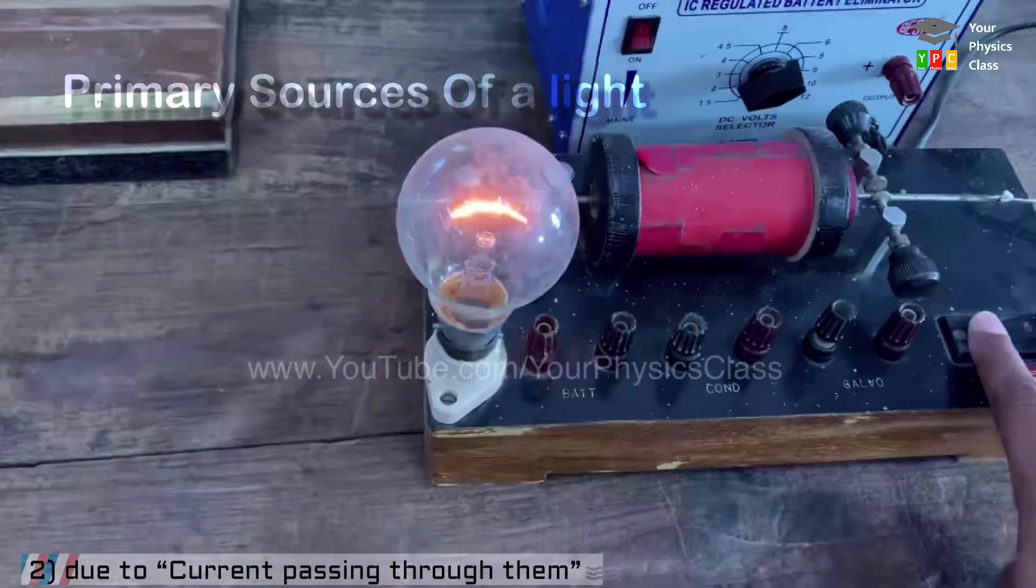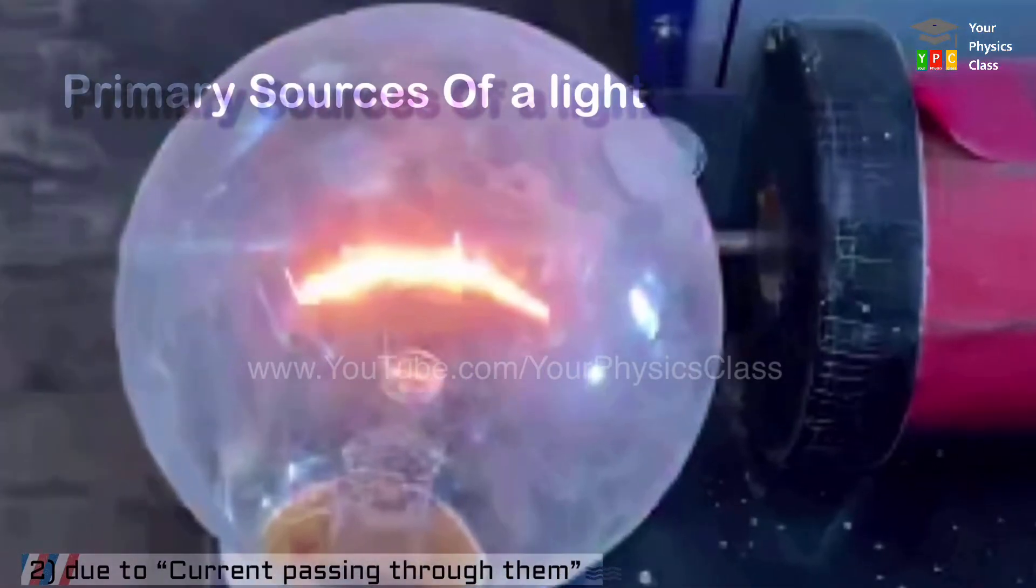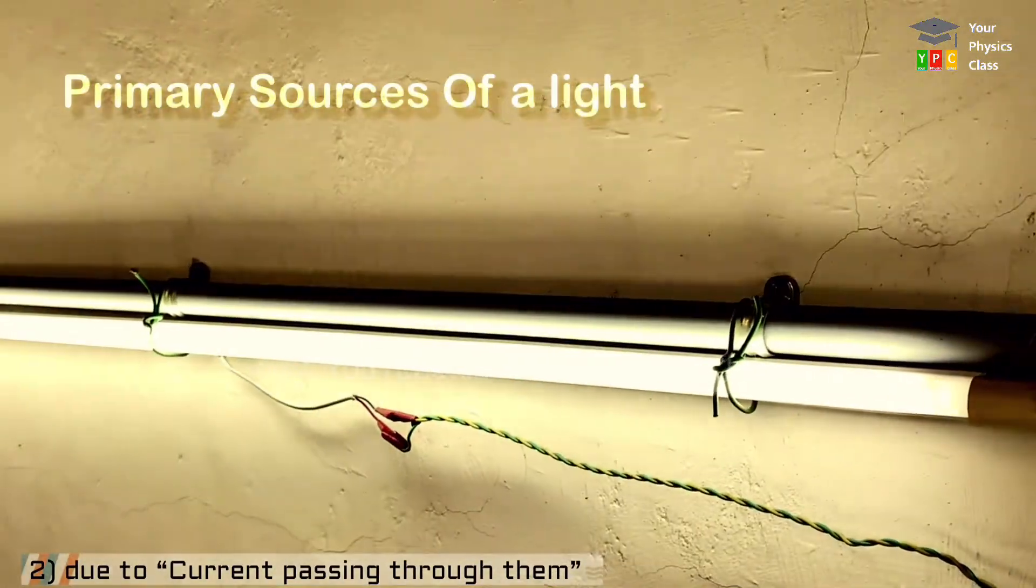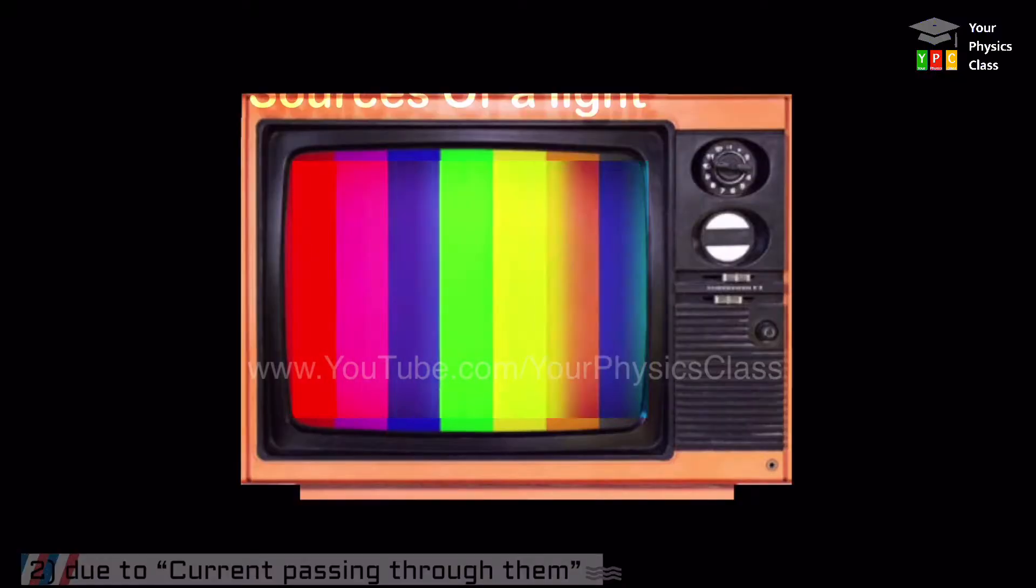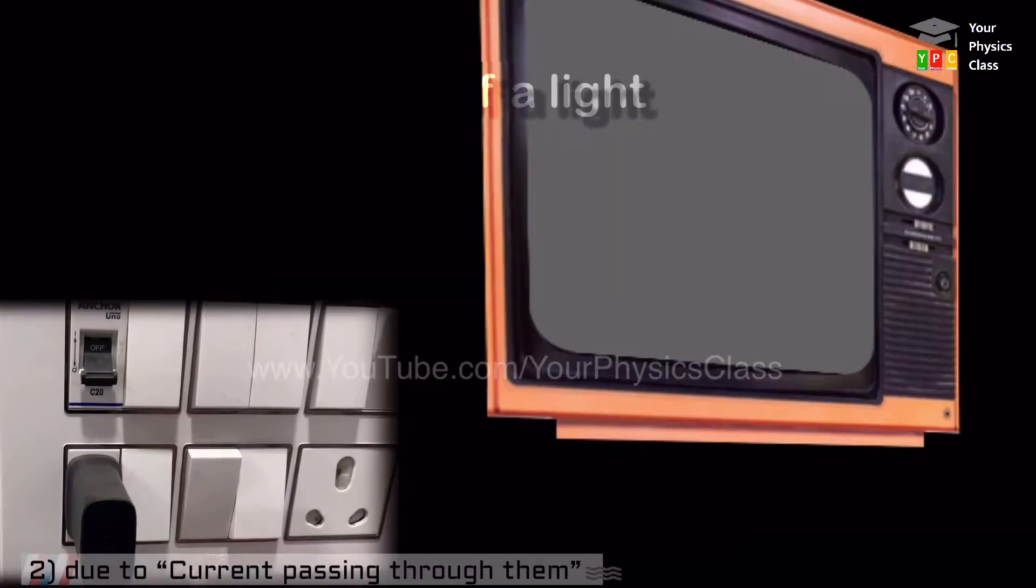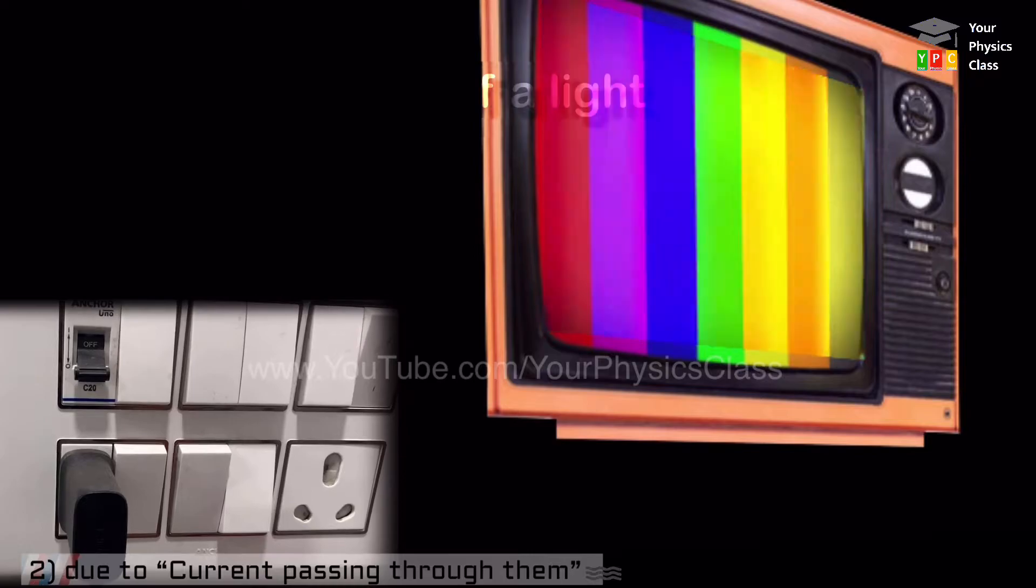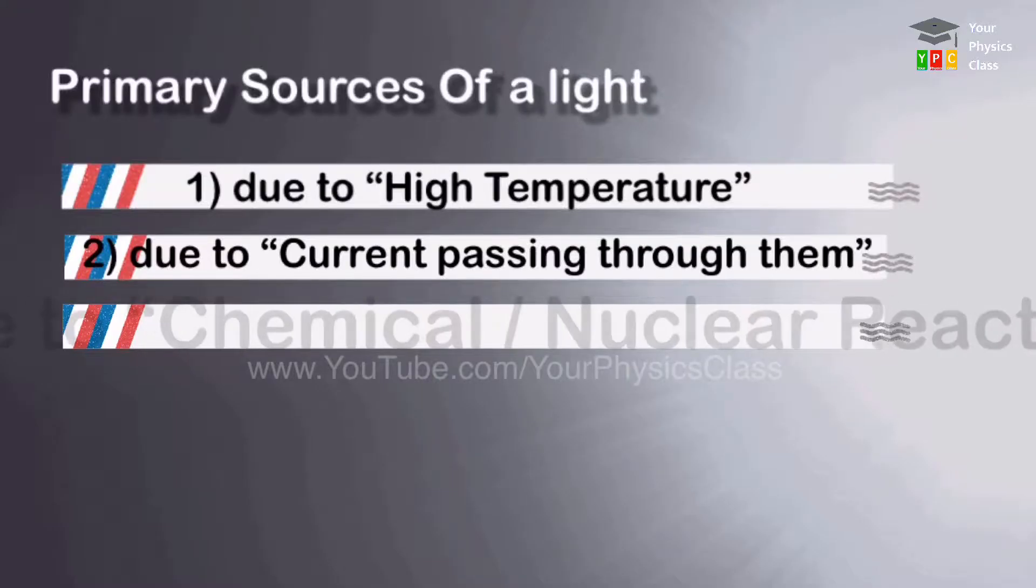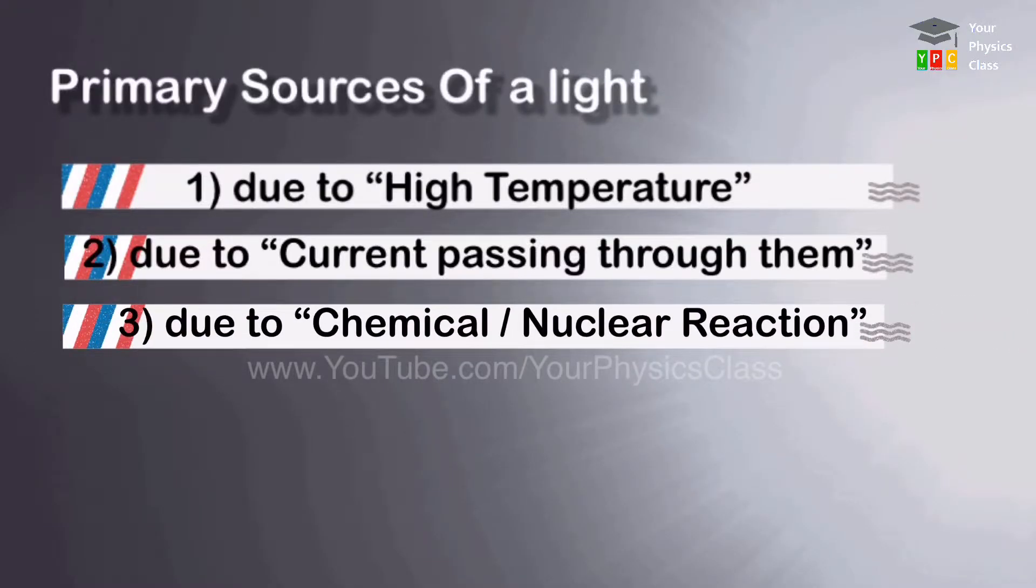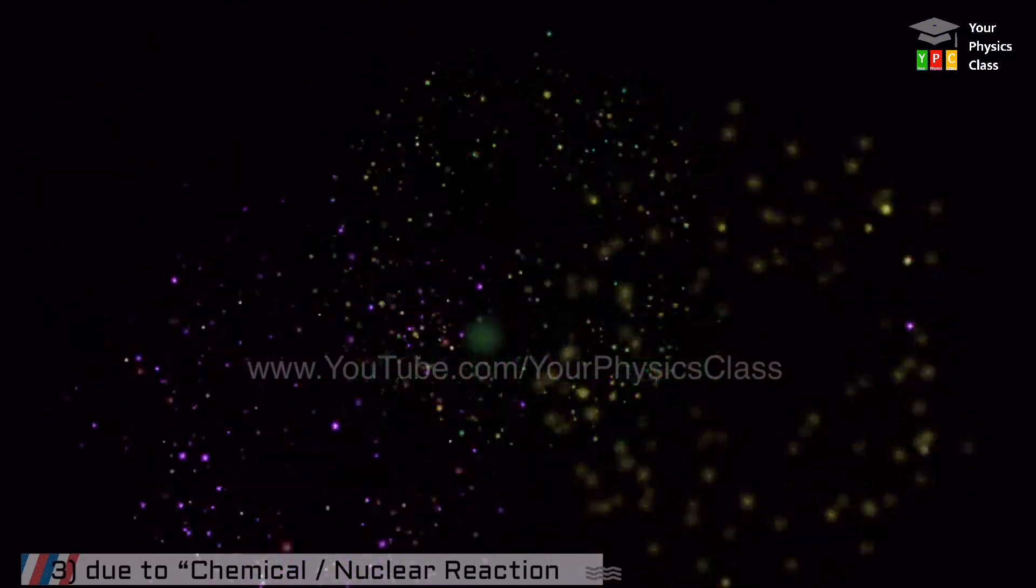For example, tube light, TV, etc. emit light when current is being passed through them. The another cause of emission of light or primary sources is chemical or nuclear reactions, for example, firecrackers.